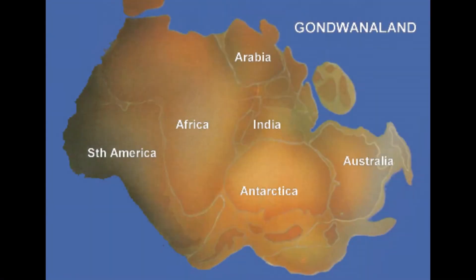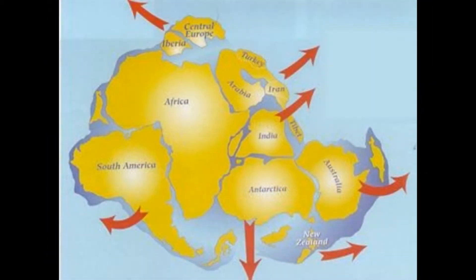As you may remember from your geography lessons at school, the continents of Earth were once joined in one huge supercontinent called Gondwanaland. About a hundred million years ago, Gondwanaland began to break up and as tectonic plates shifted, the continents moved away from each other.